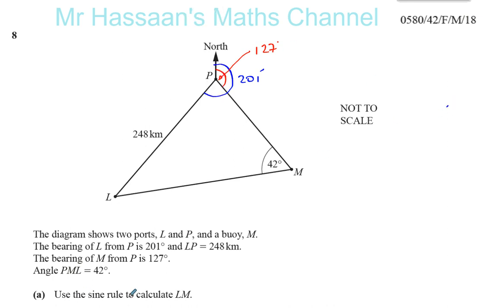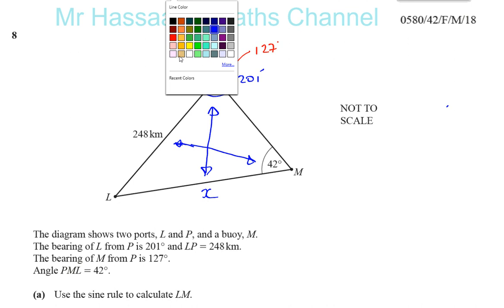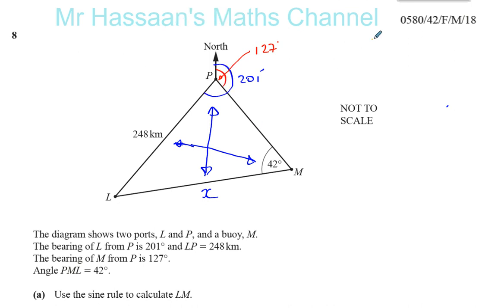So now, it says use the sine rule to calculate LM. So I need to calculate LM. I'm going to call that X. I need to know the angle opposite X to find it. For the sine rule, you need pairs of opposites. I have one pair of opposites, that's fine. I need to know at least this angle, then I can find what X is. And I can find this angle, because the angle here is going to be 201 minus 127.